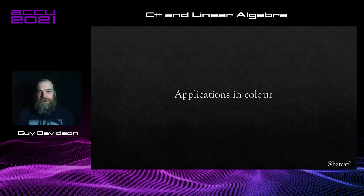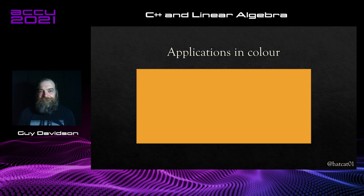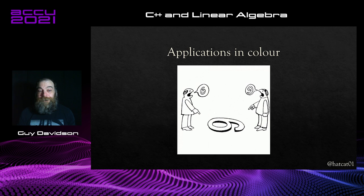Let's look at some applications in colour, which you may find unexpected but is actually quite important. What colour is this? I'm going to guess everyone put red, or some variation on red. But how about this one? Apparently it's orange, according to PowerPoint. Perhaps it depends how your monitor is calibrated. The problem we have is one of subjectivity and context — the root of all ambiguity.